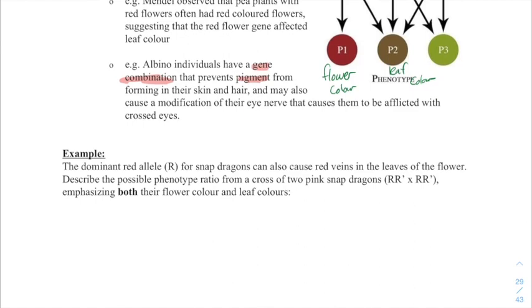So let's do a little example question here. So the dominant red allele for snapdragons can also cause red veins in the leaves of the flower. Describe the possible phenotype ratios for the cross of two pink snapdragons. That emphasizes both the color, the flower color and the leaf color.